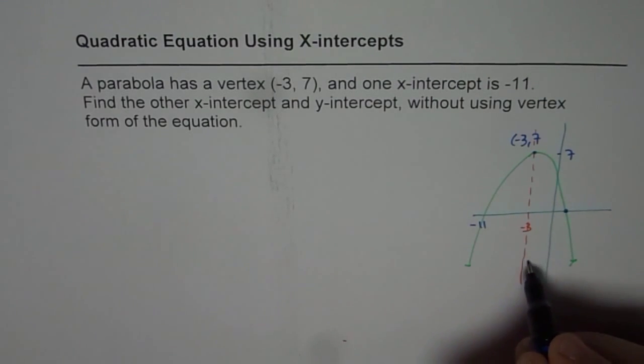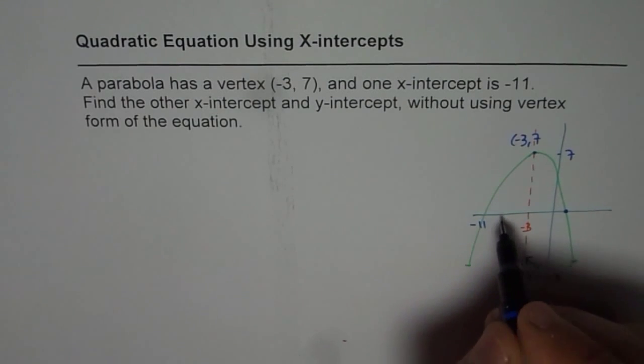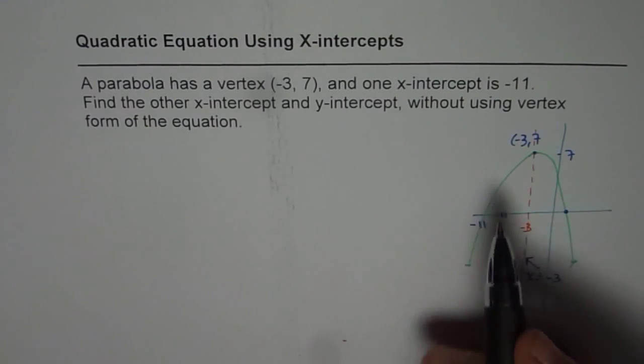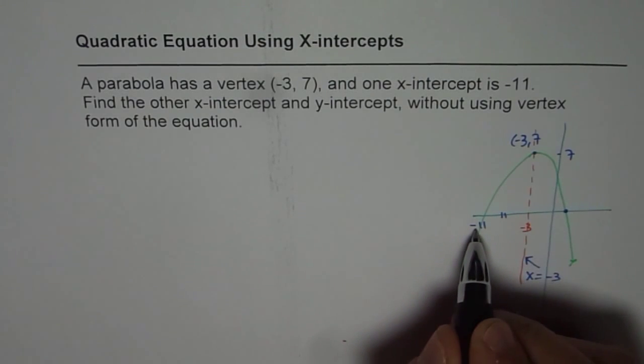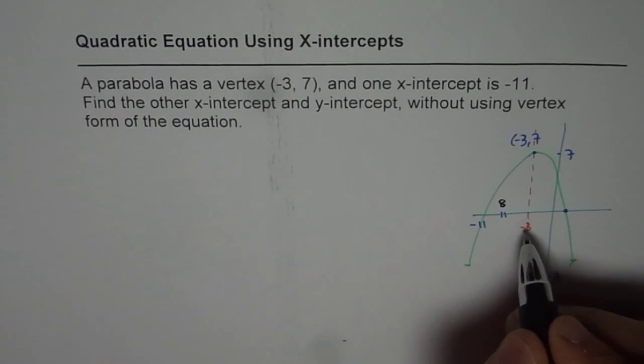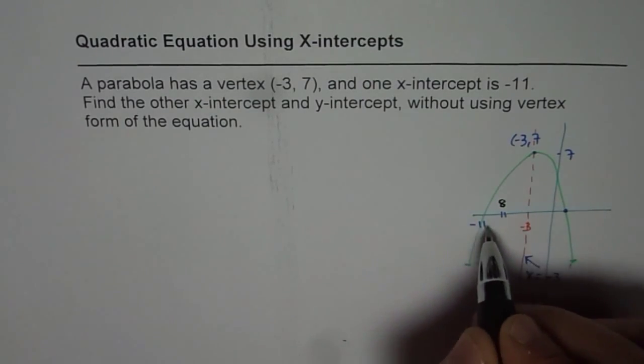We need to find the other x-intercept. How are you going to find it? Since we know that the axis is x equals to -3, then the 2 x-intercepts should be same distance away from -3, right? Now here we can calculate distance between -11 and -3 is 8 units, correct?